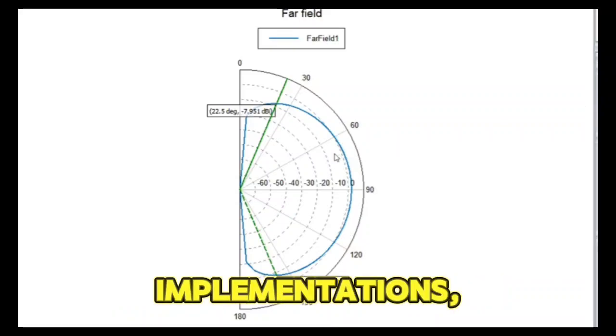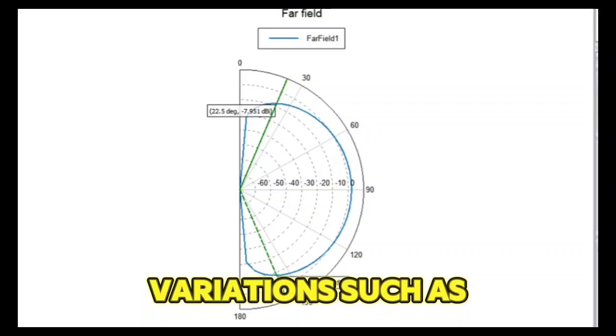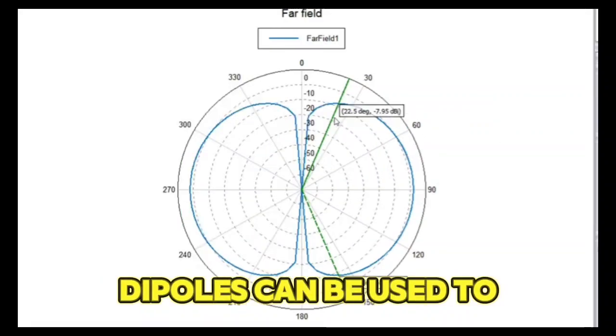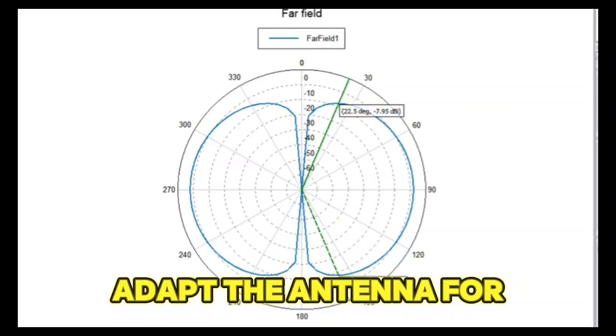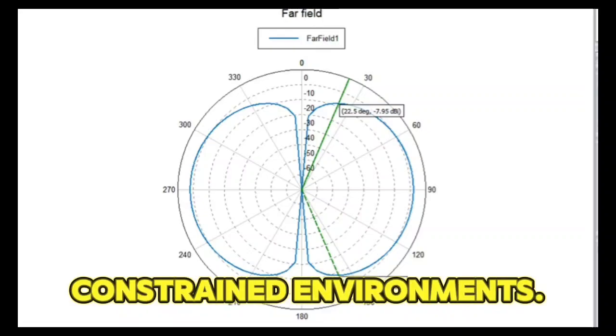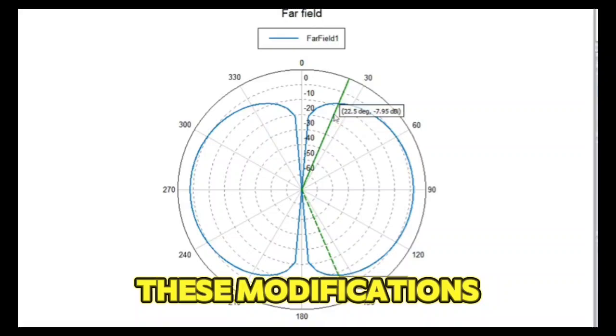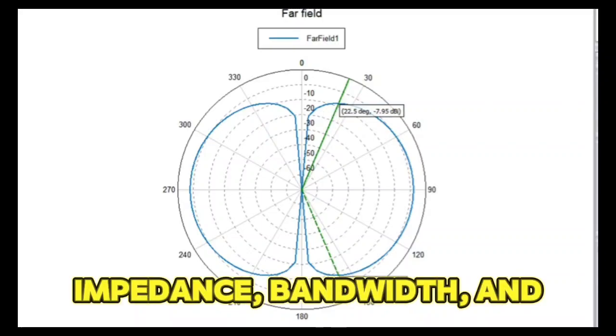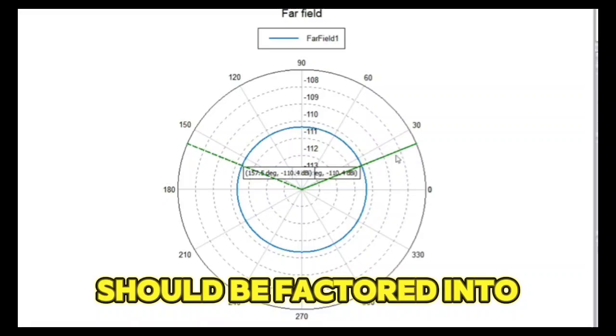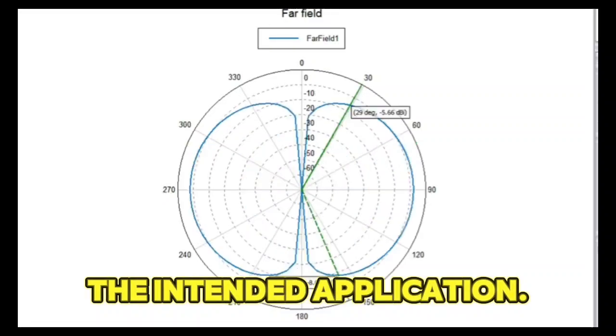In practical implementations, variations such as folded dipoles, loaded dipoles, or multiband dipoles can be used to adapt the antenna for different purposes or to improve performance in constrained environments. These modifications affect the input impedance, bandwidth, and overall efficiency and should be factored into the design depending on the intended application.